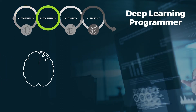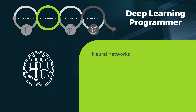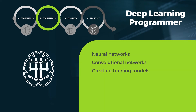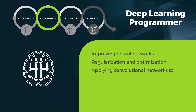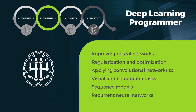Deep learning programmers are typically focused on working with neural networks, convolutional networks, creating training models, and incorporating automation and transformation into their organizations. Track 2 of your journey focuses on improving neural networks, regularization and optimization, applying convolutional networks to visual and recognition tasks, creating sequence models, and building and training recurrent neural networks.